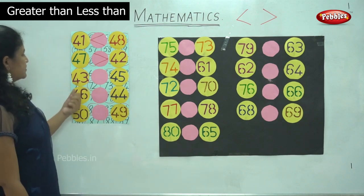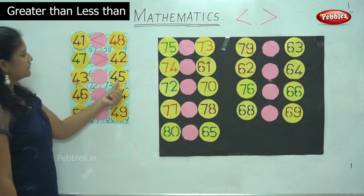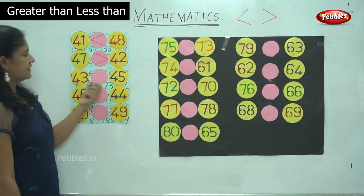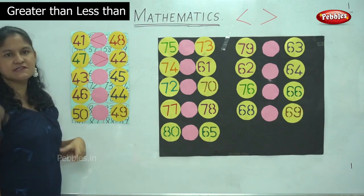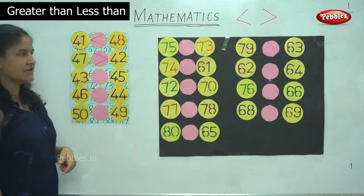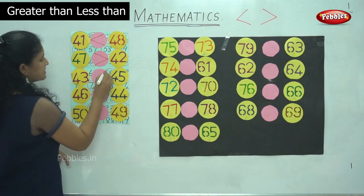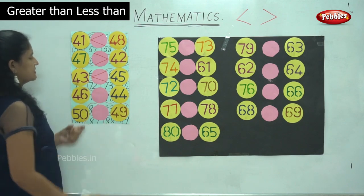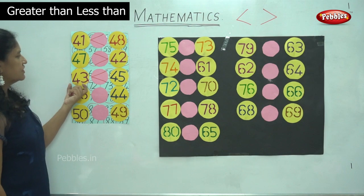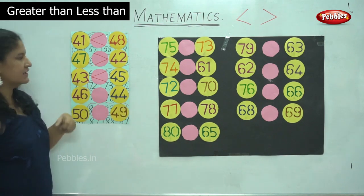The next two numbers are 43 and 45. Number 45 is the greater number, so the mouth opens towards the greater number. It is read as 43 is lesser than 45.